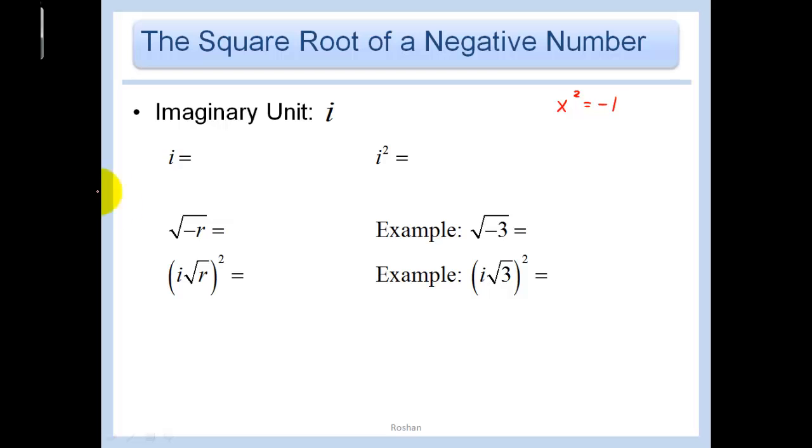And we have to start by introducing imaginary numbers. And so we define i as the square root of negative 1. If i equals root negative 1, that would mean that i squared is just root negative 1 times root negative 1 or negative 1.